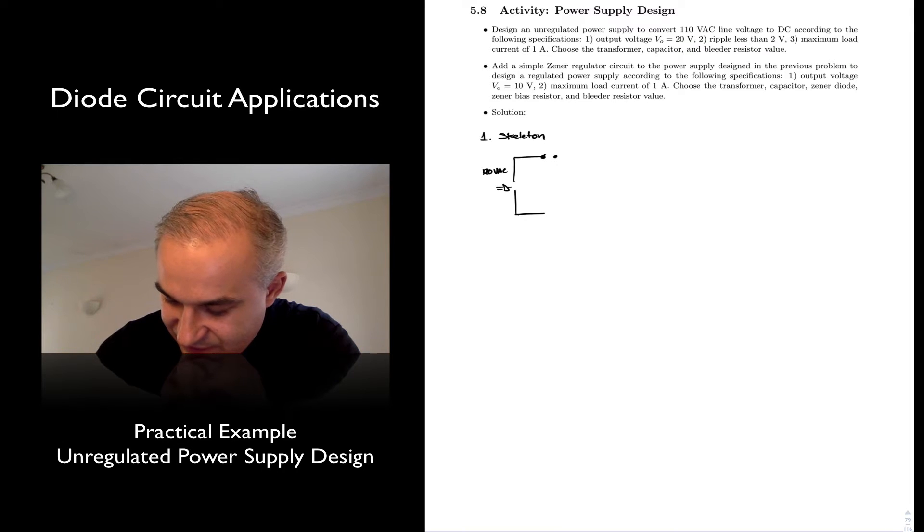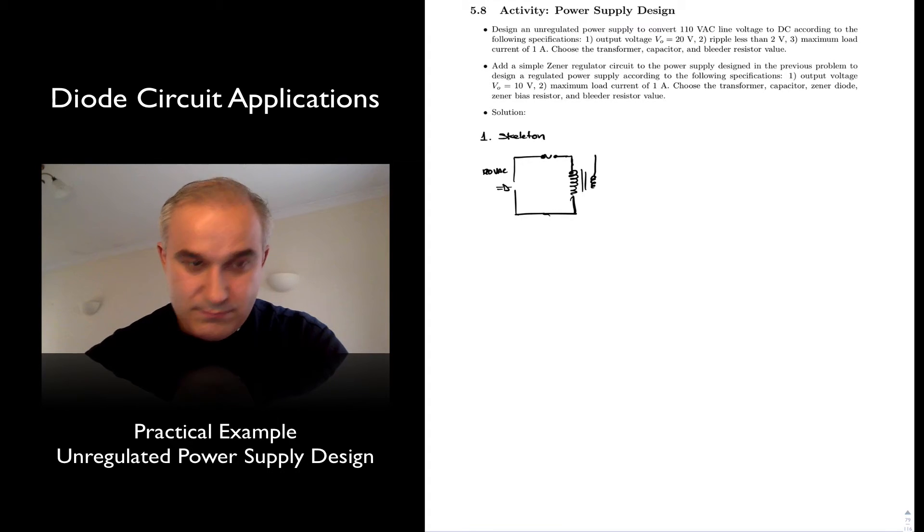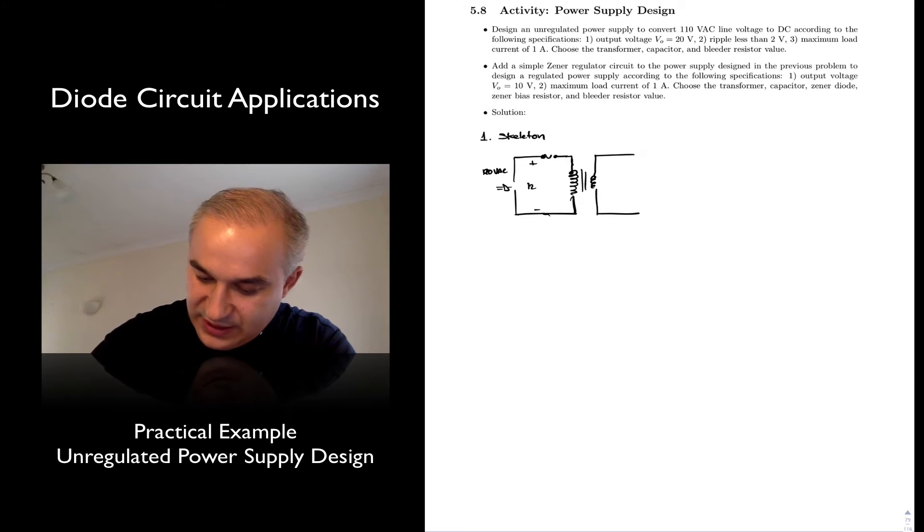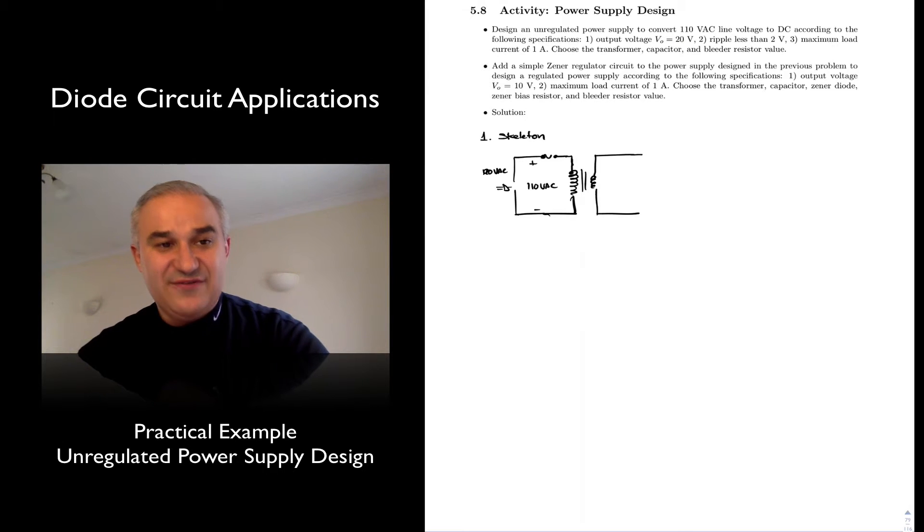What needs to happen here? Well, we may have a fuse, but then we have a transformer. So we are going to reduce that voltage, the 110 VAC, to something lower. And that's an AC voltage also.